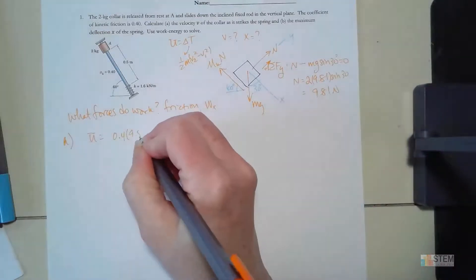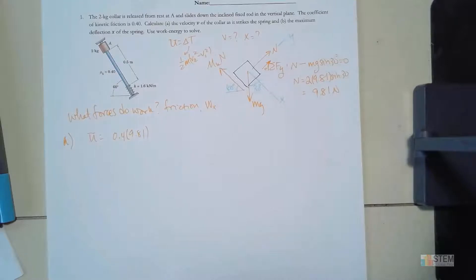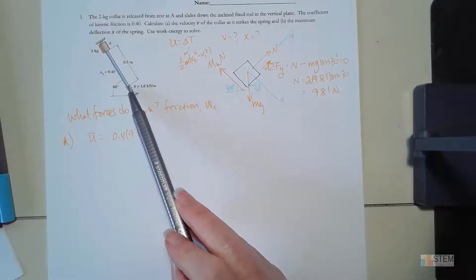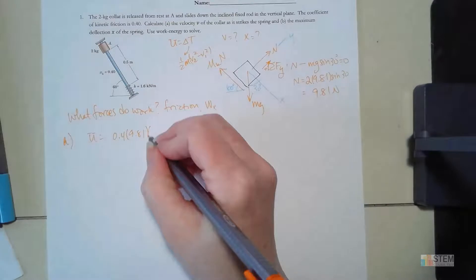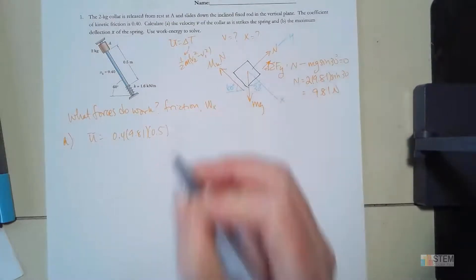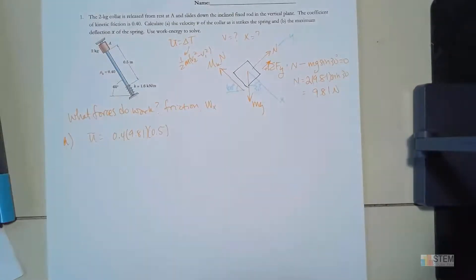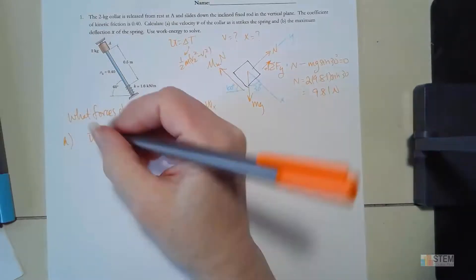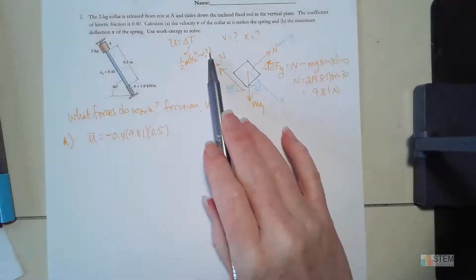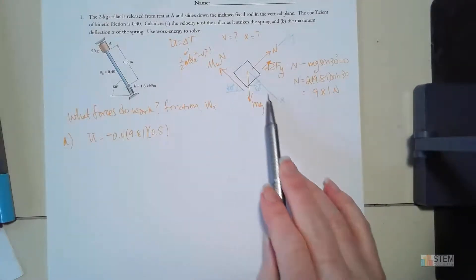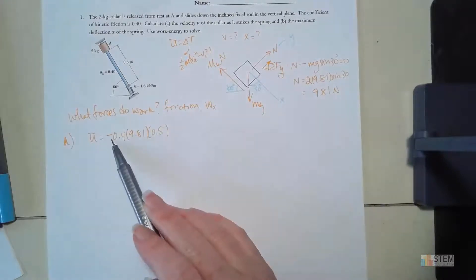Now multiply N by mu to get the friction force. The distance traveled to the spring is 0.5 meters. I need to determine the sign: since the friction force is directed up the incline and our displacement is down the incline, they are in opposite directions, so this work term is negative.